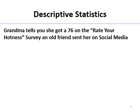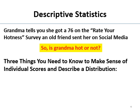Your grandma tells you she got a 76 on the Rate Your Hotness survey that an old friend sent her on social media. Is your grandma hot or not? Well, there are three things you need to know in order to make sense of an individual score. 76 is just sort of out there — is that high, low? What's the range: is it 0 to 100 or up to 5,000? We have no idea. So this is what you need to know in order to interpret grandma's hotness score.